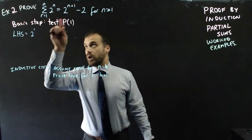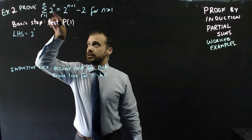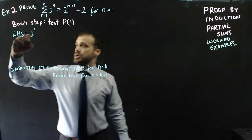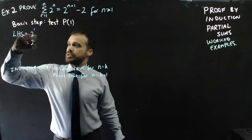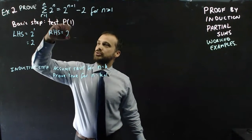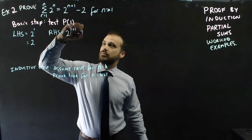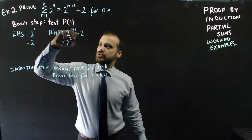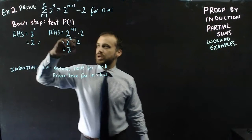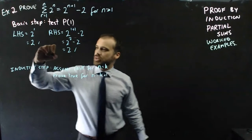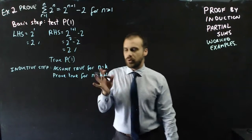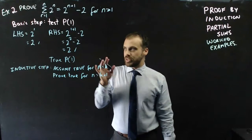For n equals 1, the left-hand side is just 2^1, which is 2. The right-hand side is 2^(1+1) minus 2, which is 2^2 minus 2, which is 4 minus 2, which is 2. Left-hand side equals right-hand side, so it is true for P(1). That's our basis step — we get marks for that.